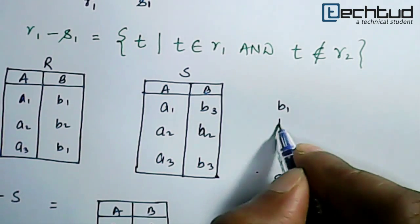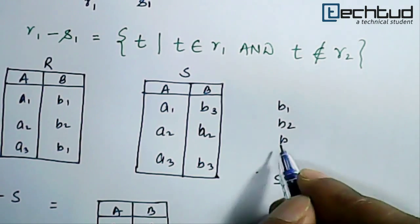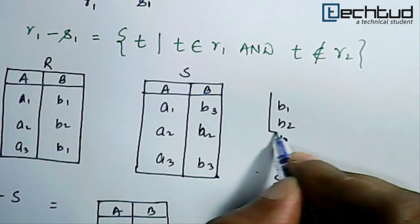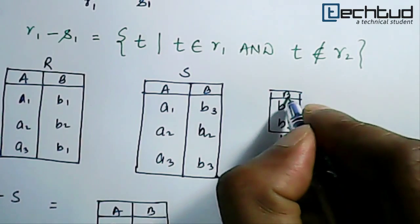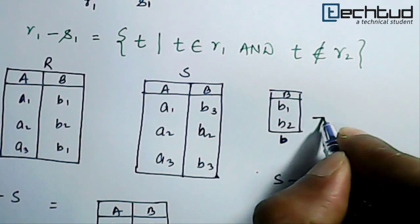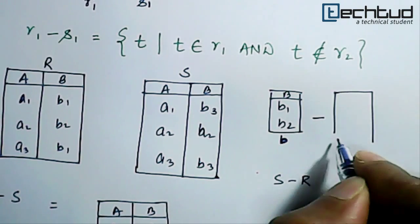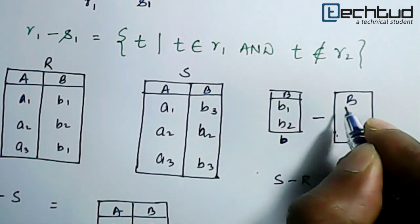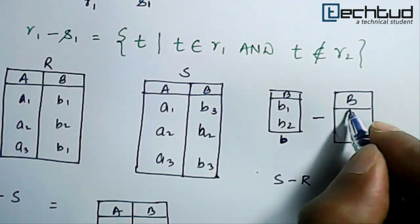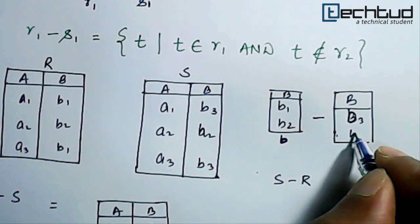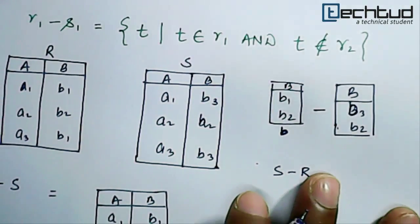We will have B1 B2 and of course only B1 B2 because in set we do not repeat the element. And now we have minus of what? Again this B attribute and here we will have B3 B2, so B3 B2.